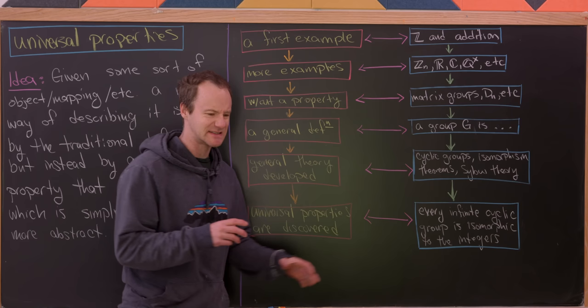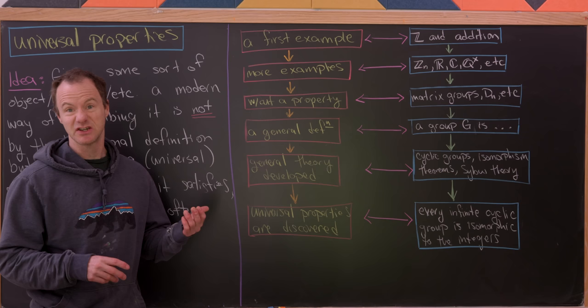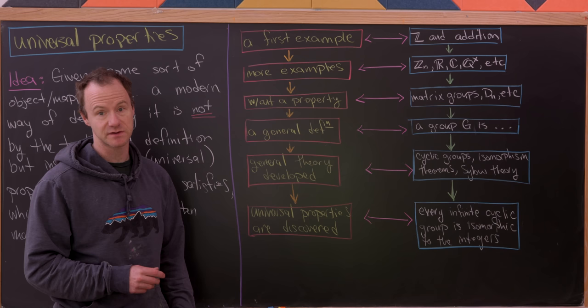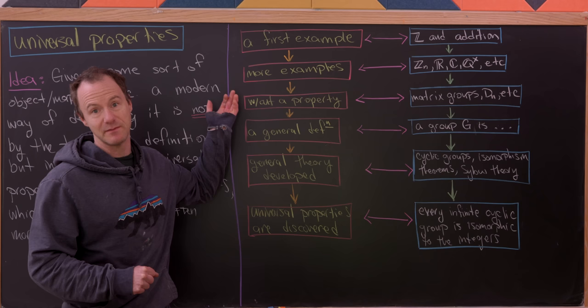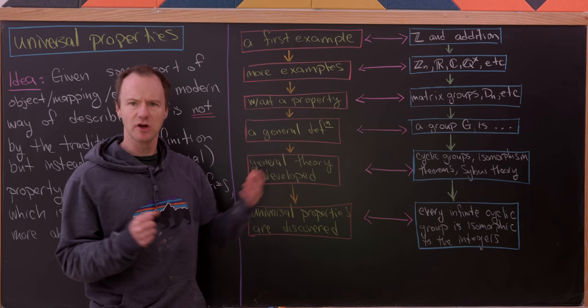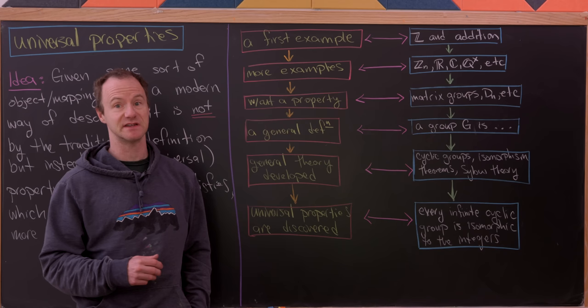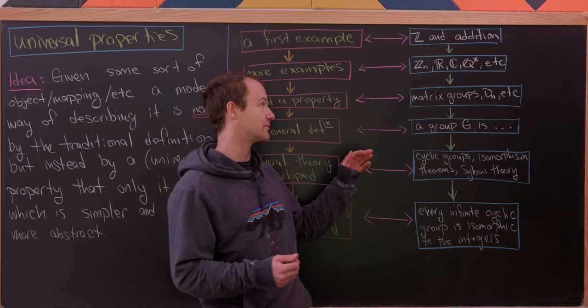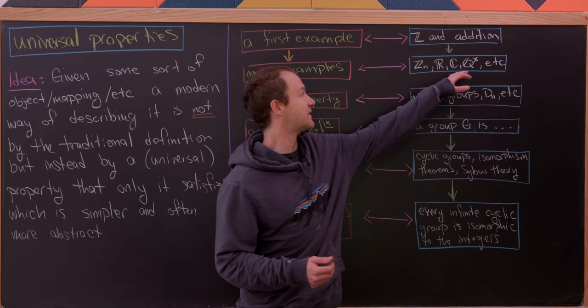Let's look at an example of this kind of path using the integers and addition, which is a really standard example of a group. You would start with something like a first example — the integers with addition, which are positive and negative whole numbers that have some nice properties when added together. From there you might look for more examples: the integers modulo n, the real numbers with addition, the complex or rational numbers with addition, or the non-zero rational numbers with multiplication.